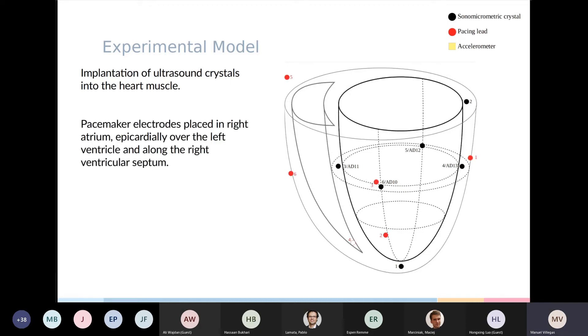In addition to that, we also place several pacing electrodes to study different pacing configurations. So we place one in the right atrium that will be here, two in the RV, one in the free wall, and one placed in the septum apical position. And then we have three pacing leads in the LV, apical, anterior, and lateral areas.